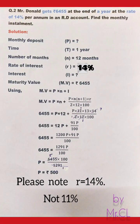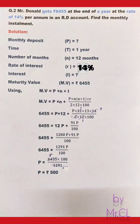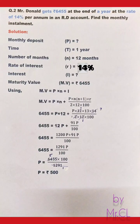Rate of interest R = 11%, interest I is unknown, and maturity value MV = ₹6455, since a person receives the maturity value at the end of the term. Using the maturity value formula MV = P × n + I, and since I is not given, we replace I with its formula.